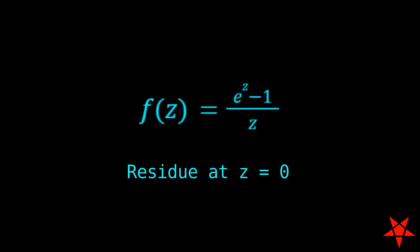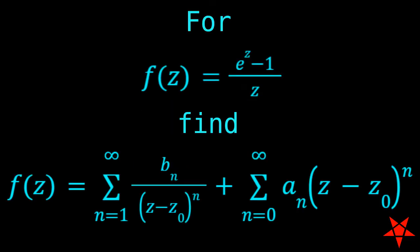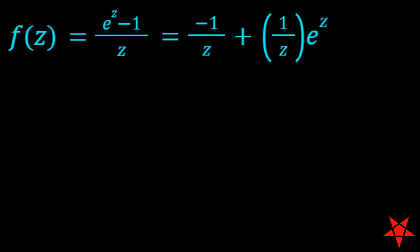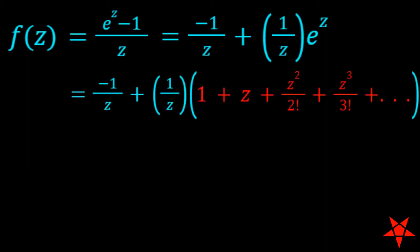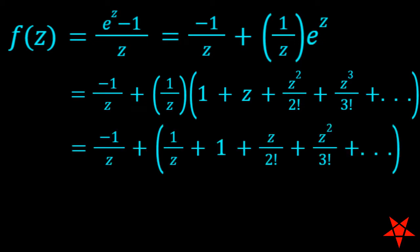Part D. Finally, we want to obtain the residue of e to the z minus 1 over z at z equals 0 in the complex plane. As with part c, we will be seeking a Laurent series centered at z equals 0. We will begin by distributing 1 over z across the numerator, which gives us minus 1 over z plus 1 over z times e to the z. And yes, I reverse those two terms for reasons that will become clear shortly. Expanding e to the z as a Taylor series like we did for part c, we can now distribute 1 over z across the individual terms. The result allows us to cancel the minus 1 over z term at the beginning with a positive 1 over z term from the Taylor series.